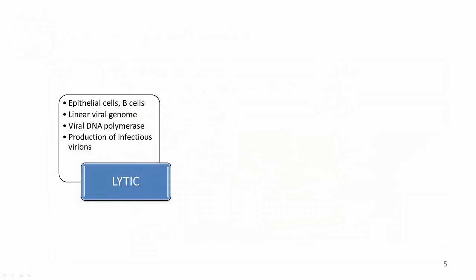The lytic cycle results in the production of infectious virions. EBV can undergo lytic replication in both epithelial cells and B cells. In epithelial cells, lytic replication directly follows viral entry. In B cells, however, lytic replication usually takes place after reactivation from latency. For lytic replication to occur, the viral genome must be linear. The latent EBV genome is circular, so it must linearize during lytic reactivation. During lytic replication, viral DNA polymerase copies the viral genome, ultimately resulting in the production of infectious virions.